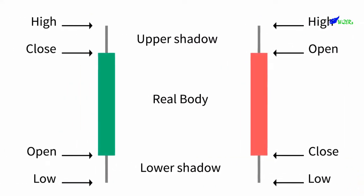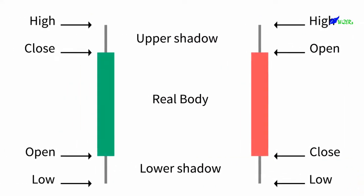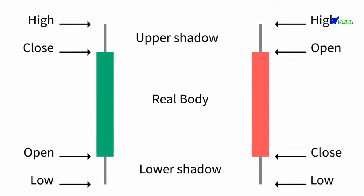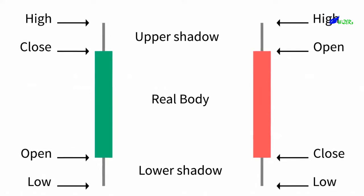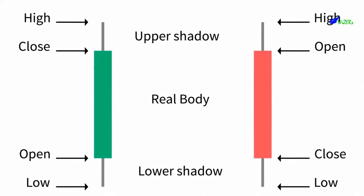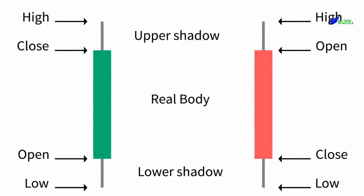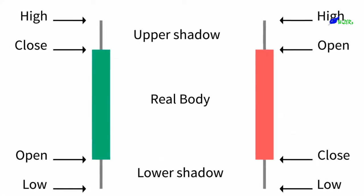In order to create a candlestick chart, you must have a data set that contains open, high, low and close values for each time period you want to display. The hollow or filled portion of the candlestick is called the body. The long thin lines above and below the body represent the high and low ranges and are called shadows.